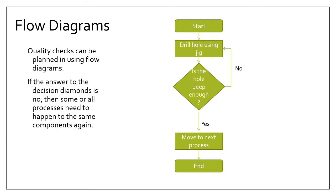The next step would be a quality control check — 'is the hole deep enough?' Any check or decision goes in a diamond shape, which will be very familiar if you do electronics. If the answer is no, you go back around and drill the hole using the jig again — that is the quality control check. If it's right, move on to the next process; if not, carry on looping back around.